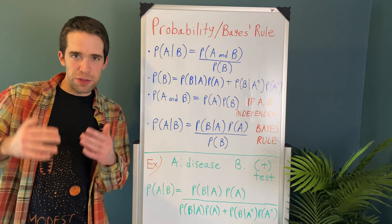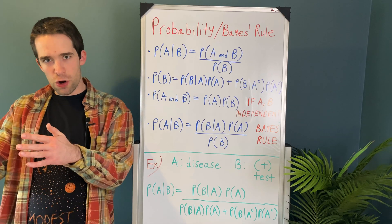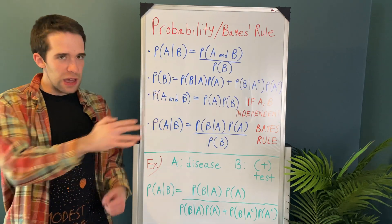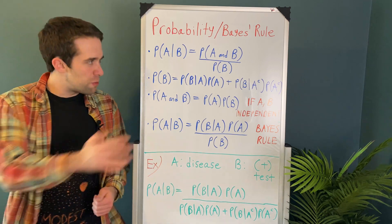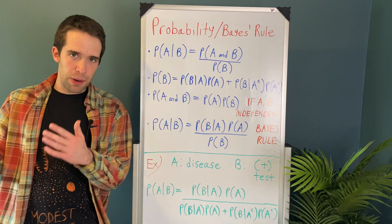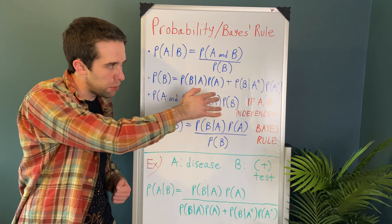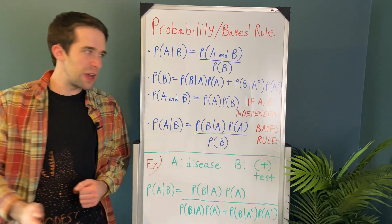It's also helpful to think about the probability of one of the events occurring in relation to the other one. So the probability of B is equal to the probability of B given A times the probability of A plus the probability of B given A complement times the probability of A complement.